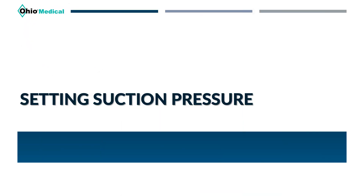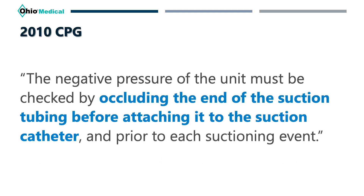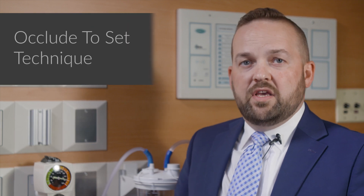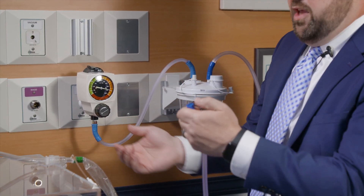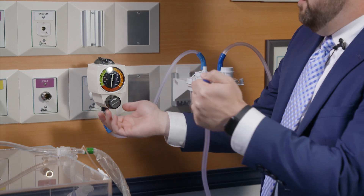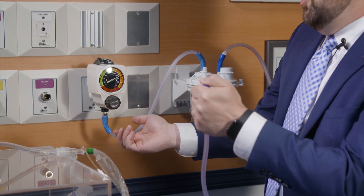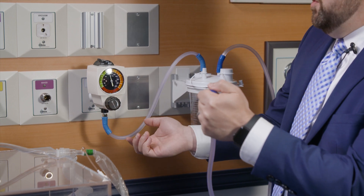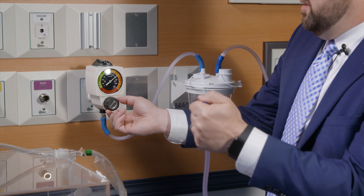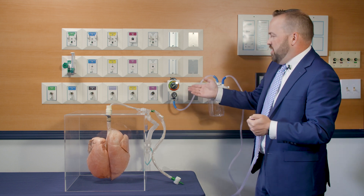Now that we've discussed what the suction pressure should be set at, how do we actually ensure the pressure is set appropriately? The CPG states that the negative pressure must be checked by occluding the end of the suction tubing before attaching it to the suction catheter and prior to each suctioning event — this procedure is referred to as 'occlude to set.' To demonstrate: go to the vacuum regulator and remove the tubing from the appliance you're using. Put your thumb over the end of the tubing and pulsate as you decrease the pressure on the regulator. For this example, I'm setting to 140 — suction pressure should start around 100 to 120, going no more than 200.